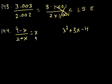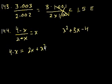Let's see if we could simplify this a little bit. Let's multiply both sides of this equation times 2 plus x. So you get 4 minus x is equal to 2 plus x times x, which is 2x plus x squared. Let's subtract x from both... no, add x to both sides. So you get 4 is equal to 3x plus x squared.